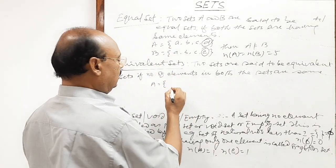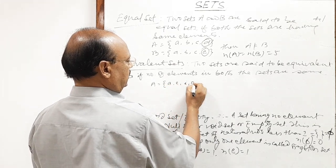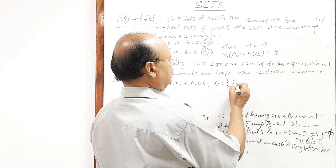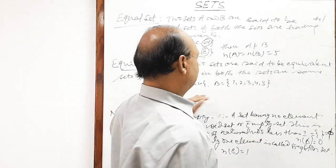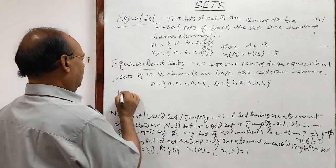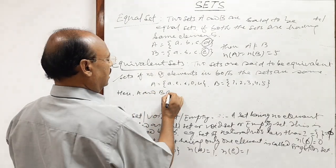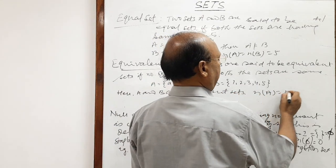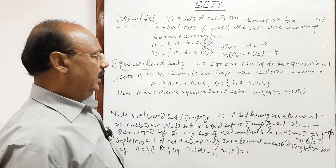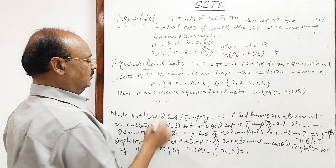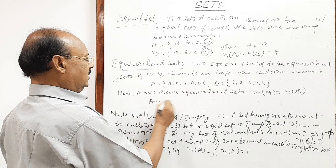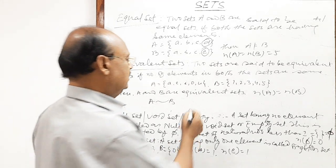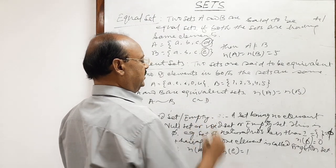As an example: set A has all vowels of the English alphabet — A, E, I, O, U — and set B has all natural numbers less than or equal to 5 — that is 1, 2, 3, 4, 5. Then A and B are equivalent sets, since n(A) equals n(B) equals 5. Two equivalent sets are connected with the equivalence notation. If A is equivalent to B, or if sets C and D have the same number of elements, we write C ~ D.